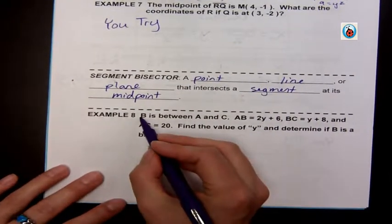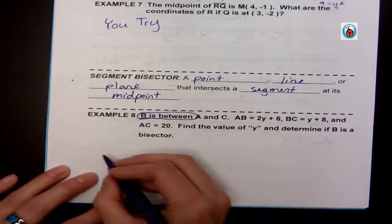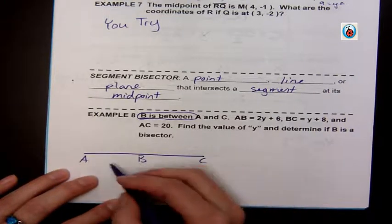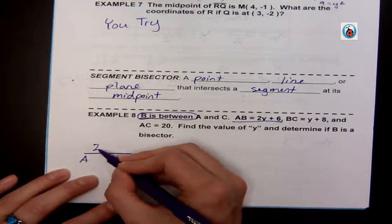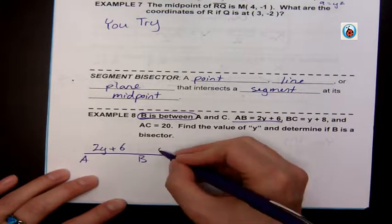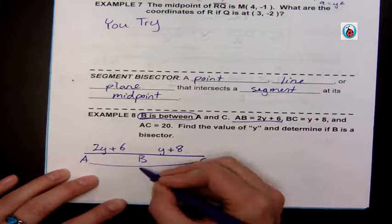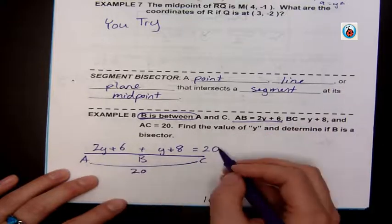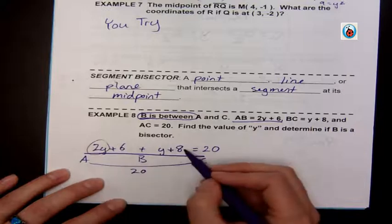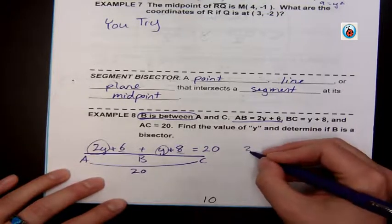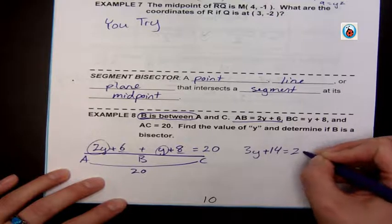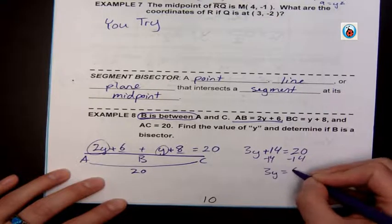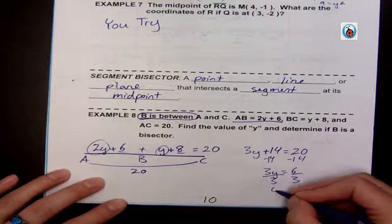Here we're going to read: B is between. Just like we're doing on our last lesson, we draw our line, B in the middle, A and C. So AB is 2y + 6, BC is y + 8, AC is 20. So I add my two parts to equal the whole. Then I do my solve steps: I combine my terms and get 3y + 14 = 20. Subtract 14 to get 3y = 6, and divide by 3 to get y = 2.